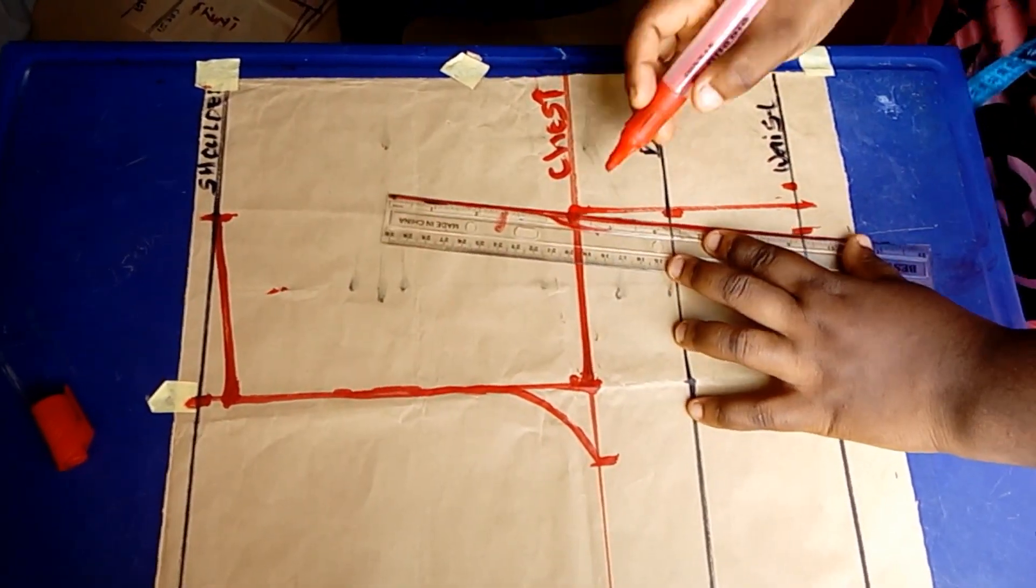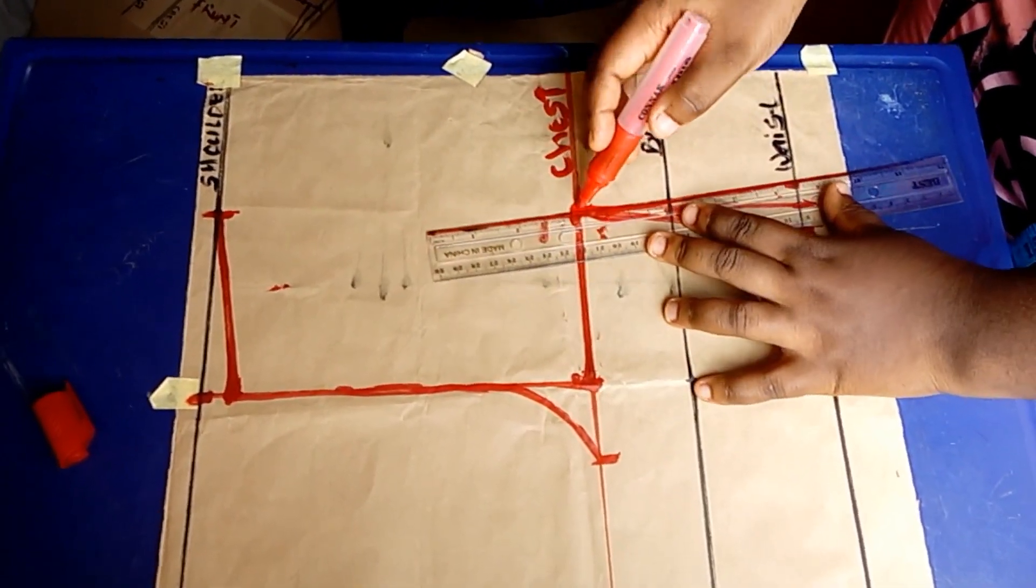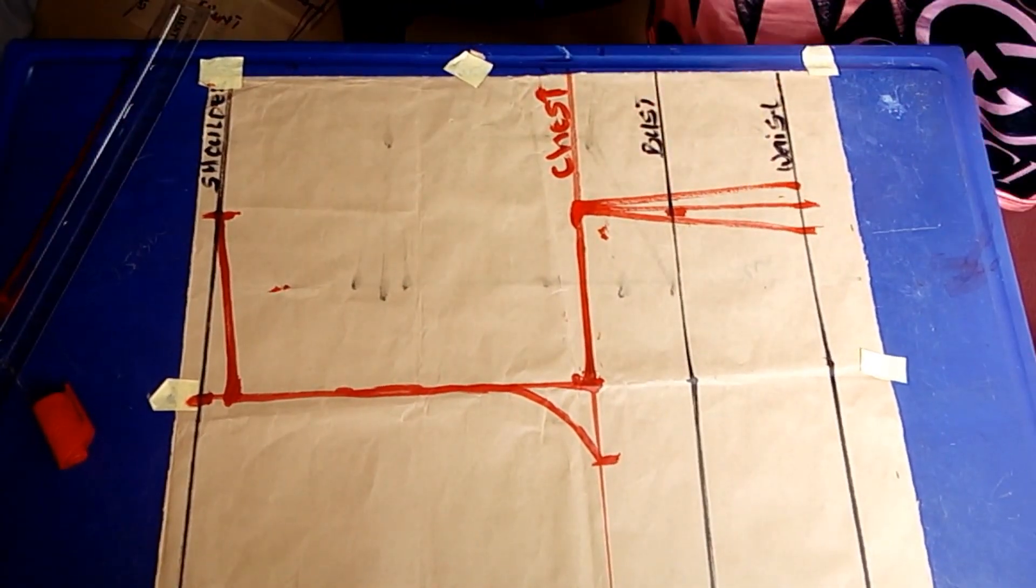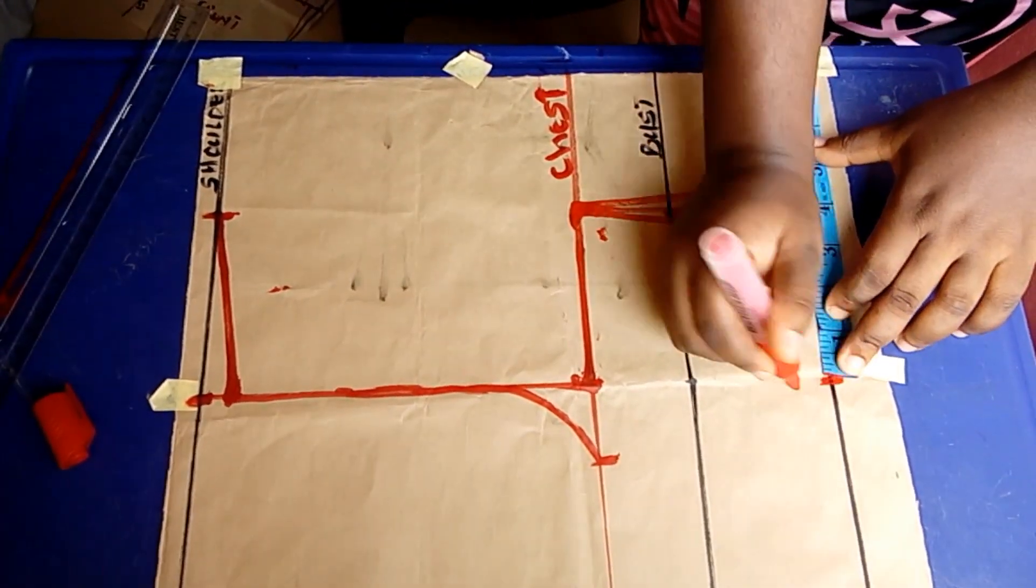I'm just repeating it, taking a half inch dart, and as you can see I'm taking it from the chest line. Now I'm going to be inputting my waist measurements.